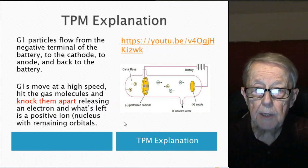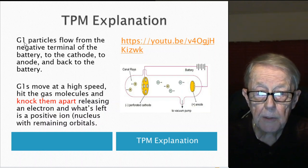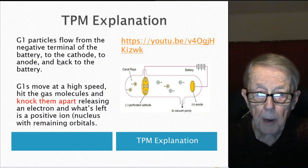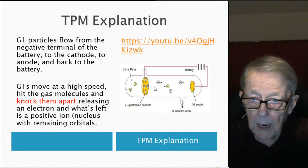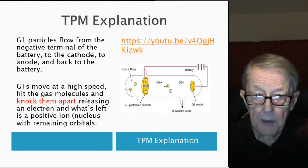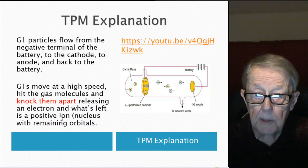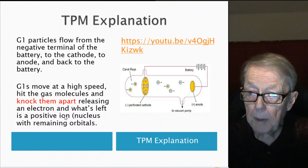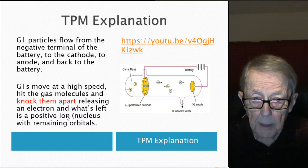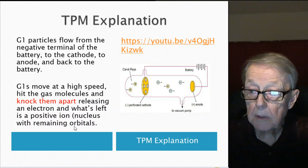Well, the particle explanation, of course, is different. The electrons are, in the particle model, we call them G1 particles. They flow from the negative terminal of the battery to the cathode to the anode and back again. The G1s move at high speed around here and hit the gas molecules and knock them apart, releasing an electron or another G1. And what's left is a positive ion. Now, the previous slide talked about protons. It depends on what gas you use, you could end up with something even larger. But you knock an electron loose and you're left with a positive ion, that is, the nucleus with whatever remaining orbitals it has.